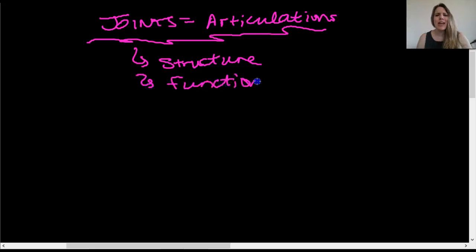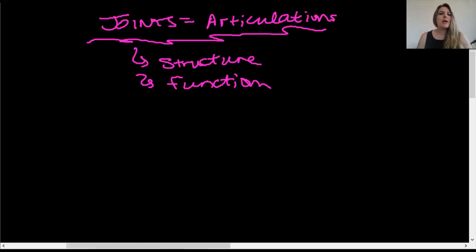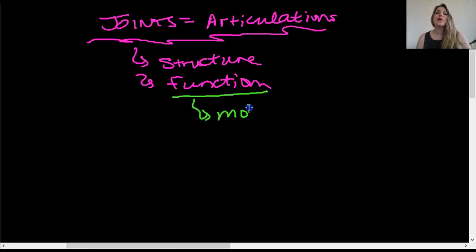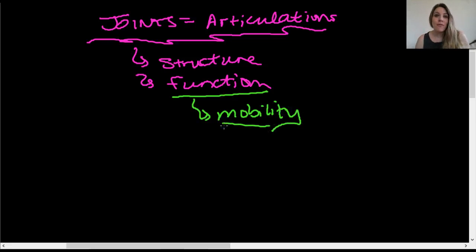Everything has a structure and a function. We're going to start off with function, and in particular that function is going to deal with mobility. We are going to classify our joints based on their function with regards to mobility — how they move.